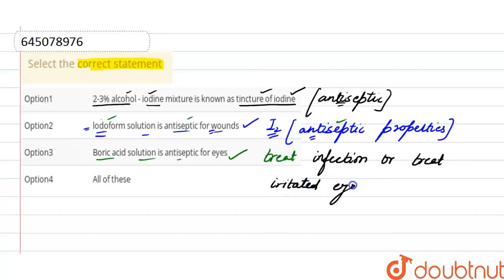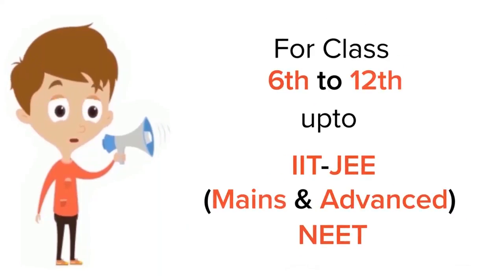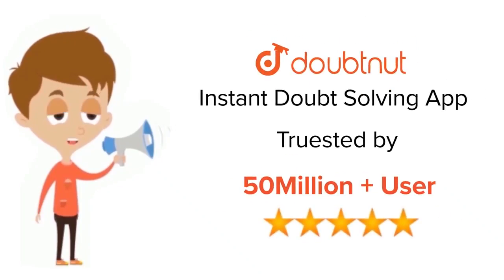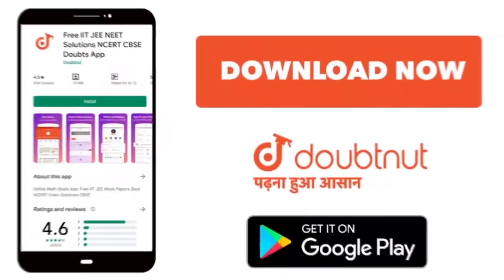So all the options are correct, so option 4 - all of these statements are correct. For class 6 to 12, IIT-JEE and NEET level, trusted by more than 5 crore students. Download Doubtnet today.